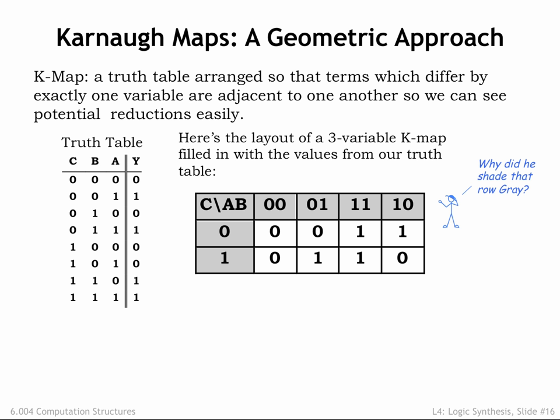Note that the columns have been listed in a special sequence that's different from the usual binary counting sequence. In this sequence, called a gray code, adjacent labels differ in exactly one of their bits. In other words, for any two adjacent columns, either the value of the A label changed or the value of the B label changed.